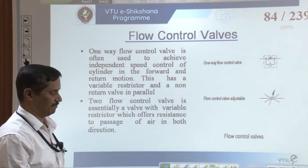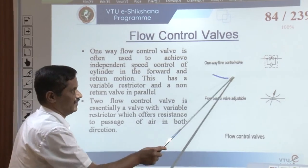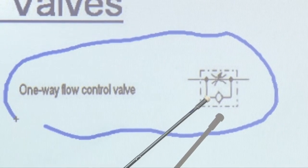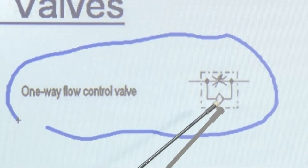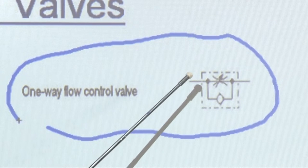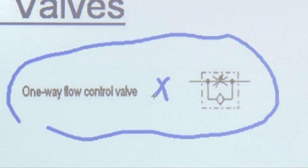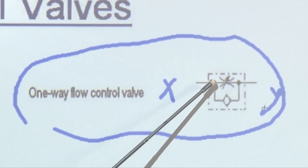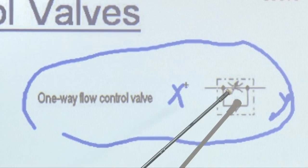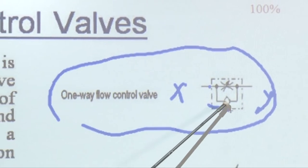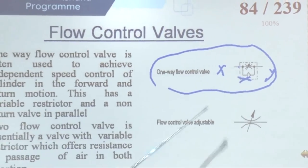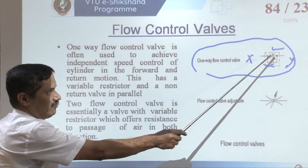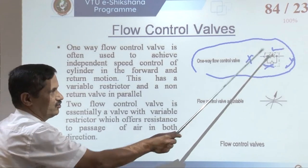The other type is the one-way flow control valve. In the one-way flow control valve, an additional line is taken with a ball attachment. Suppose X is the input; air travels from input to output Y through the upper restricted path, because the direction of the umbrella and the flow direction are the same, so air cannot go through the lower path. Air is compulsorily allowed only in the upper path, and the flow is reduced by the set percentage before reaching Y.